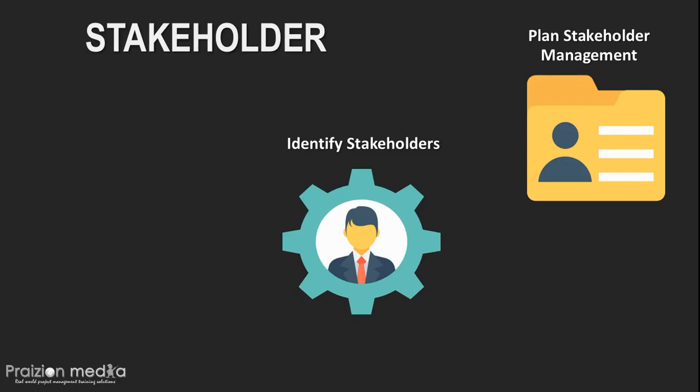You plan: this stakeholder is currently unaware (C for current), we desire them to be in a leading role (D for desired). Or a stakeholder is currently neutral but we really want them to be supportive — not even to lead, just offer some support, be on our side. You need to know the five categories of stakeholder engagement, which are in the PMBOK Guide 5th edition. If you get an exam question asking which category is the second from the left or the fourth category, that's stuff you need to know.